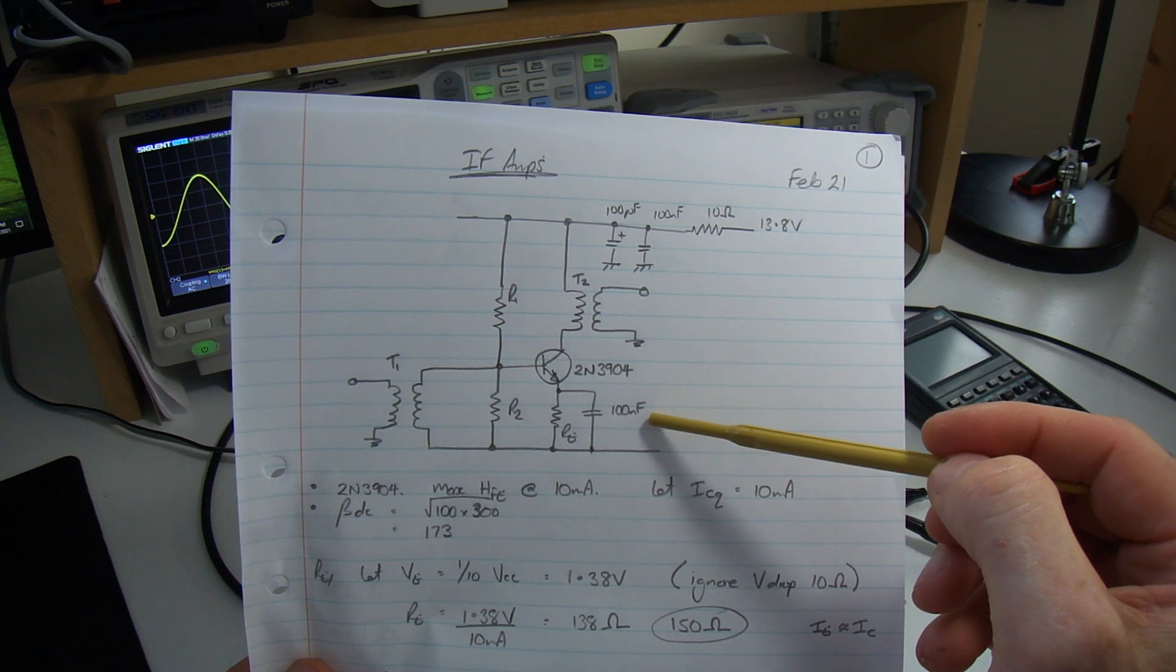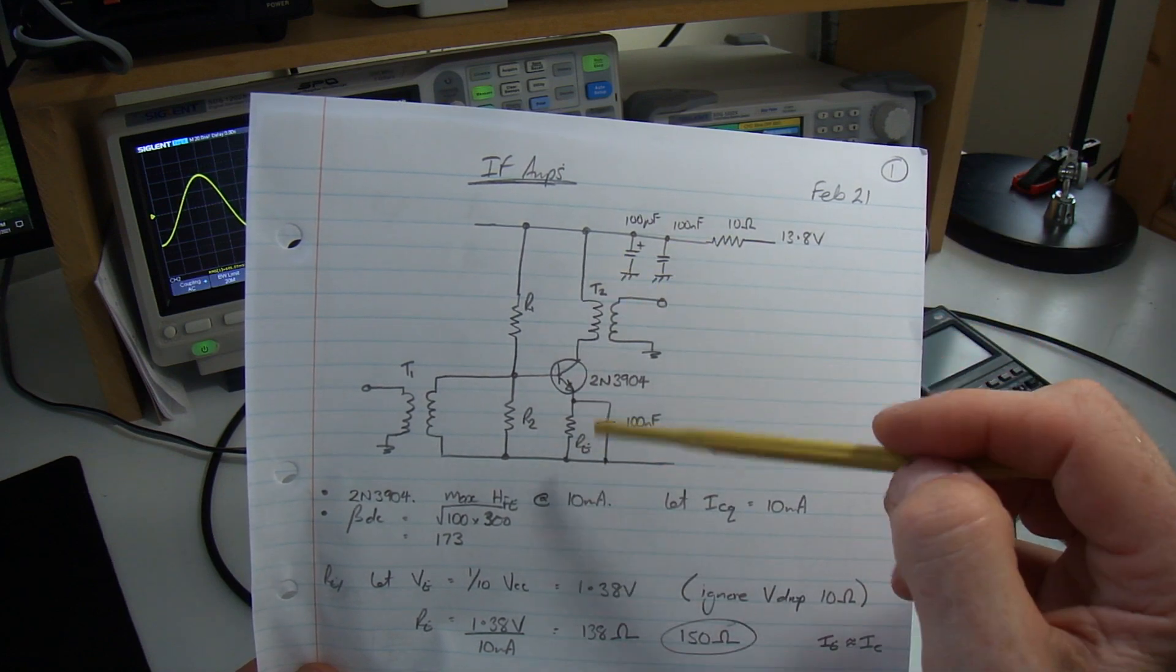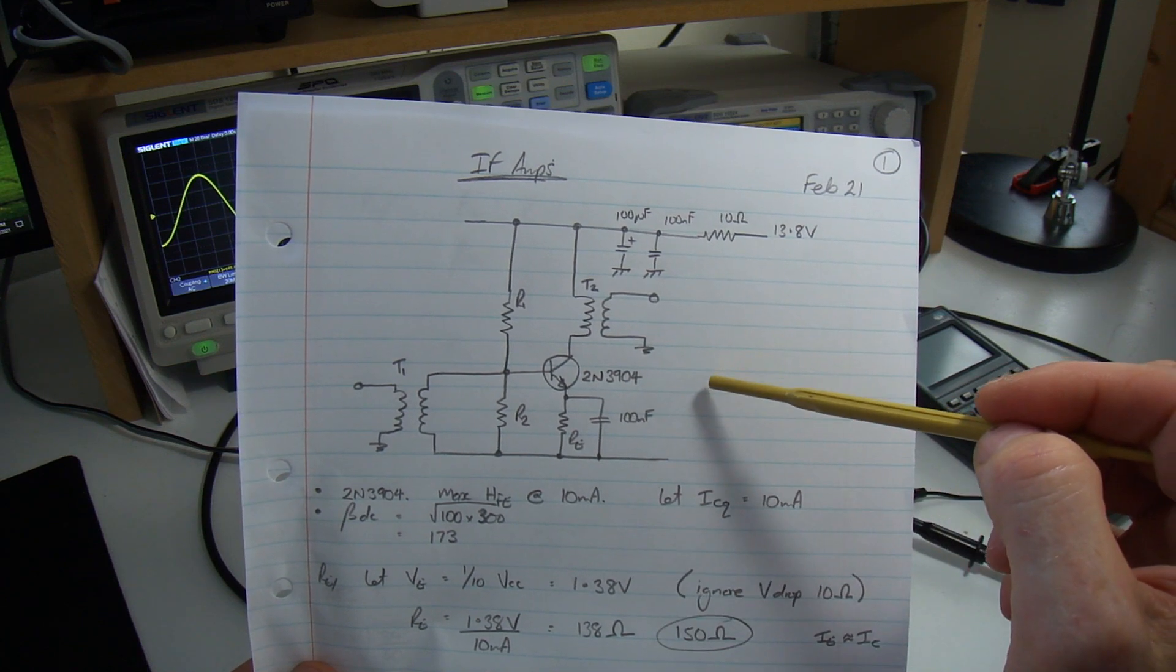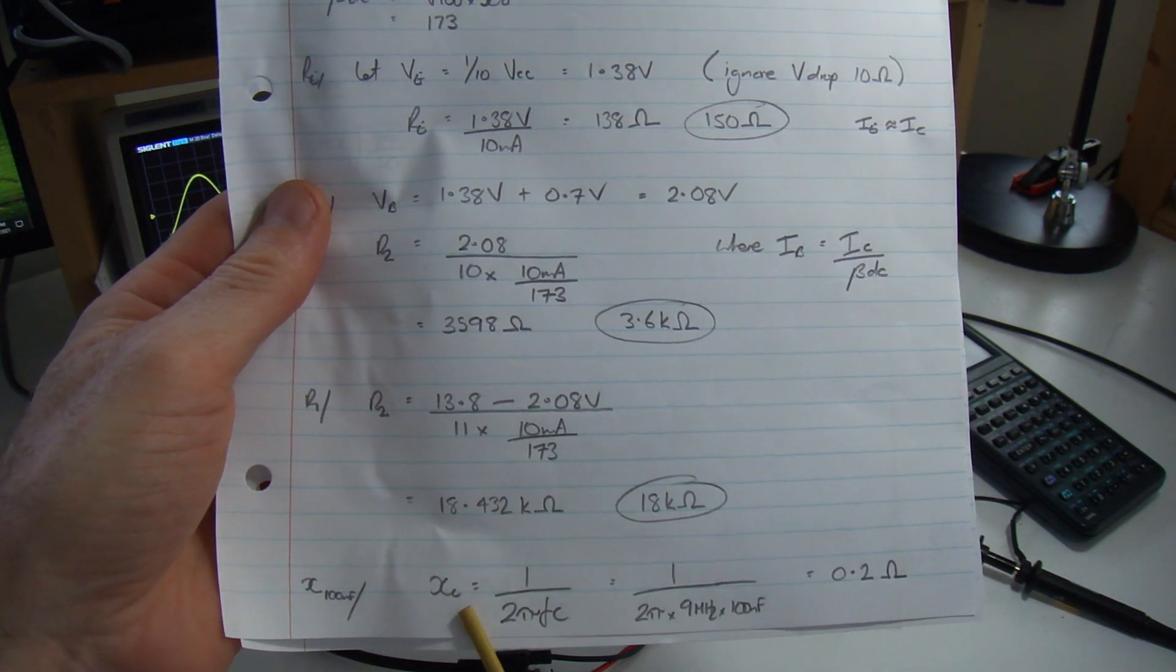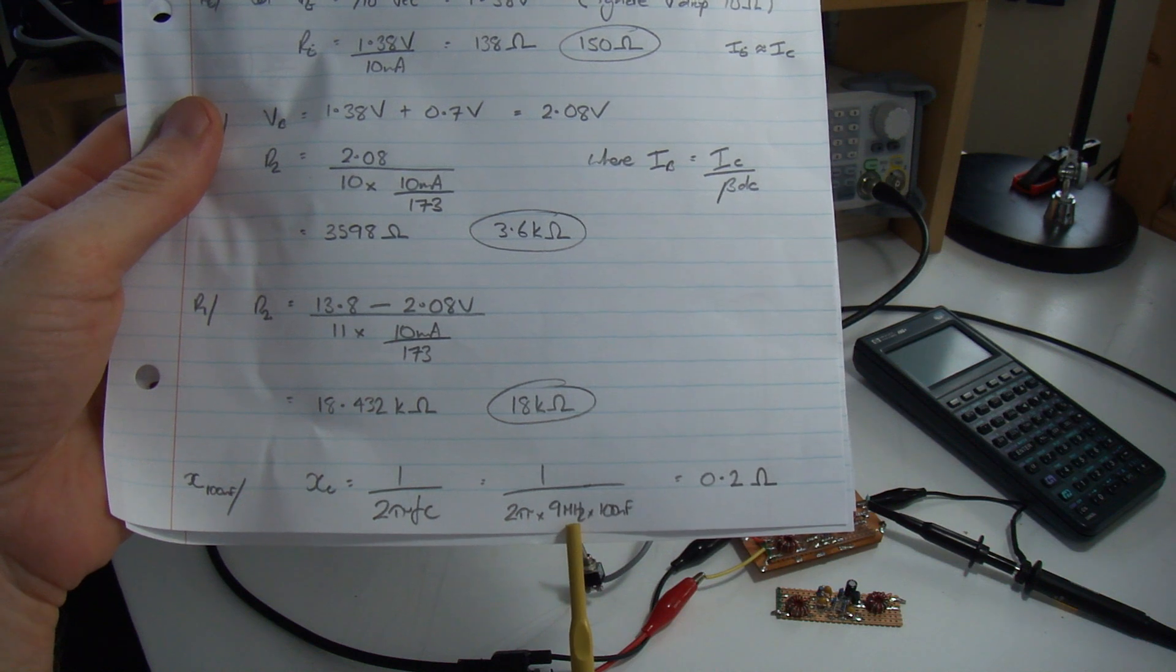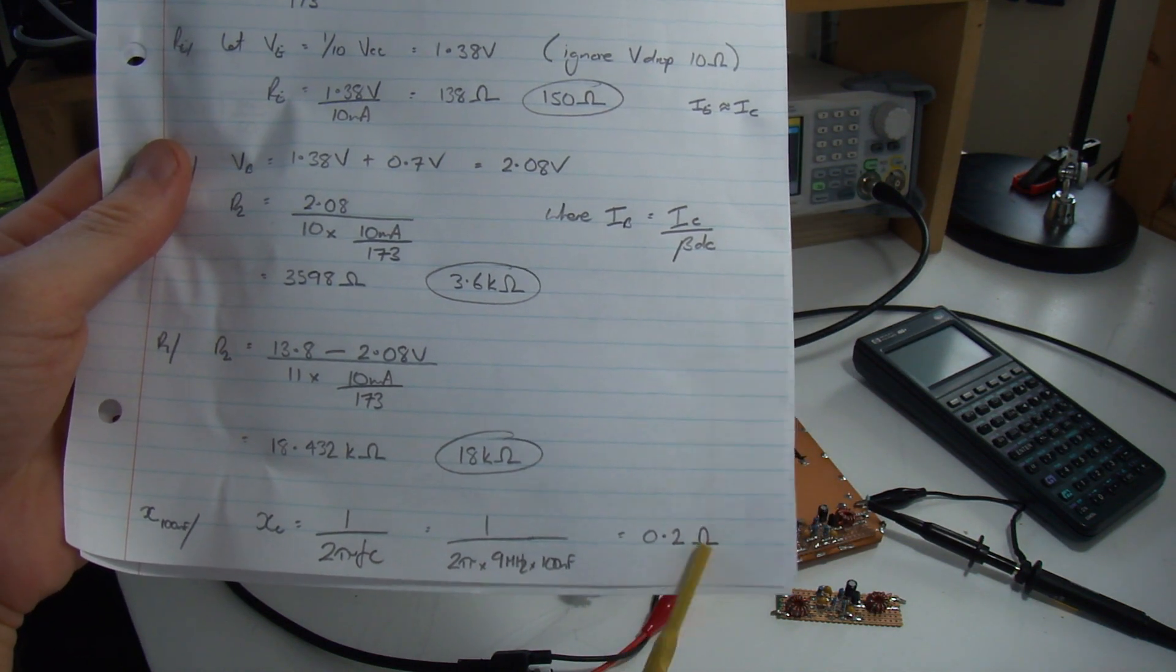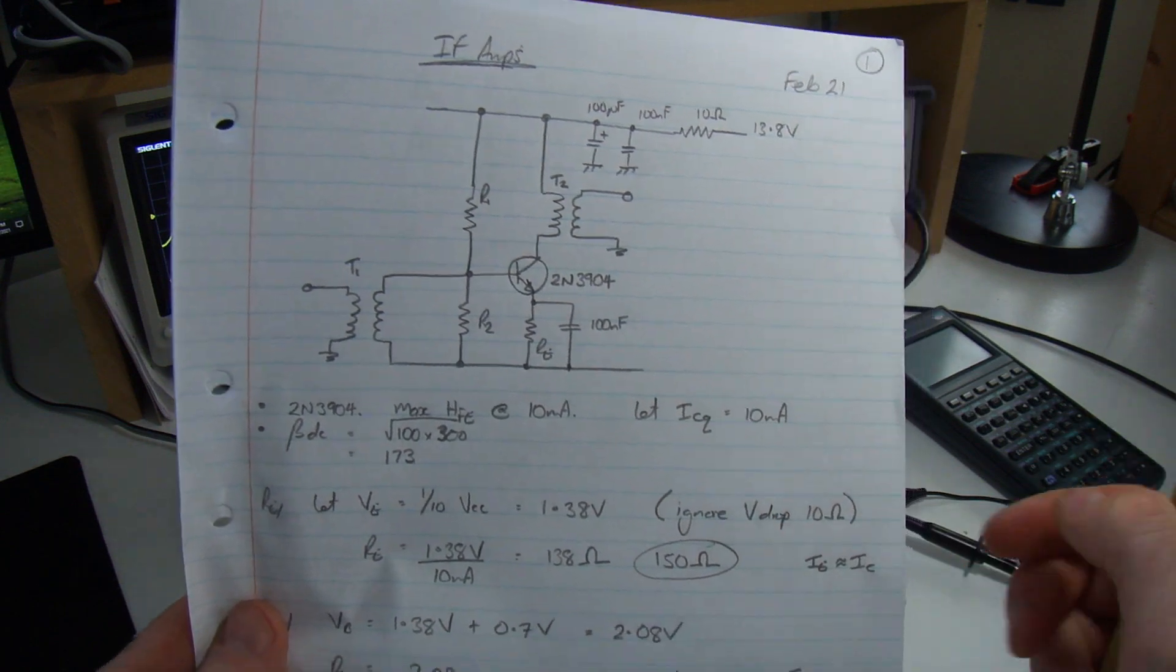I've got here notionally 100 nanofarads as the decoupling capacitor. I'm going to run this flat out from an AC point of view, so I'm going to fully bypass that emitter resistor. At the frequency of operation, which is 9 megahertz, my capacitive reactance XC equals 1 over 2 pi FC. 2 times pi times 9 megahertz times 100 nanofarads comes out at 0.2 ohms. That's well and truly a short with regards to 150 ohms.